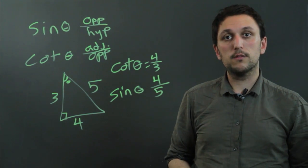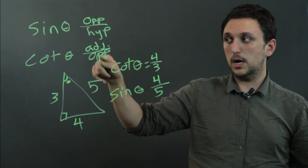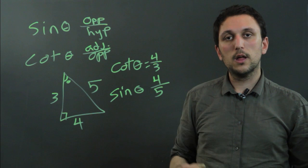So I'm Charlie Kasov, and you just learned how to find the sine from the cotangent, basically adjacent over opposite. So once you find your opposite, you can find your hypotenuse. Thanks a lot.